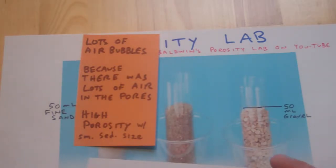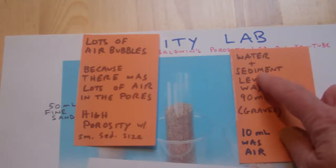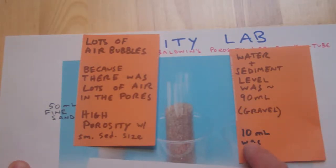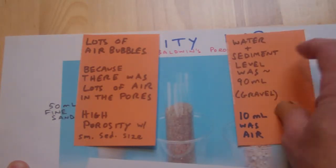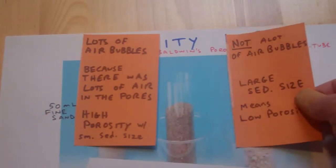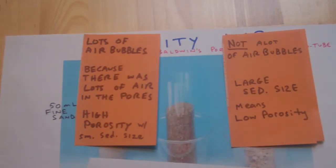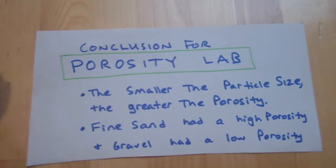When we did the same thing with the gravel — 50 mils of water plus 50 mils of sediment — the level was 90 milliliters, which tells us only 10 milliliters was air. So the large gravel pieces have a low porosity compared to the sand. Conclusion: the smaller the particle size, the greater the porosity. Fine sand had high porosity; gravel had low porosity.